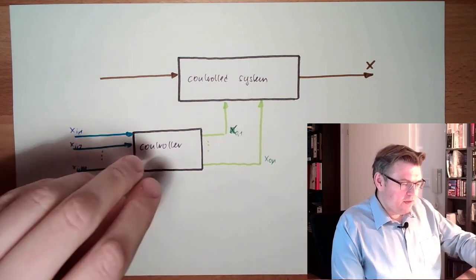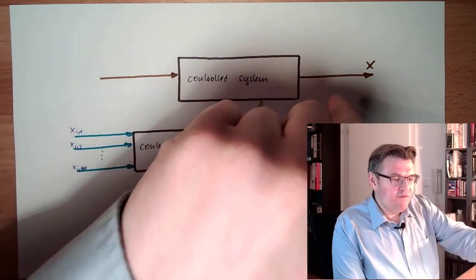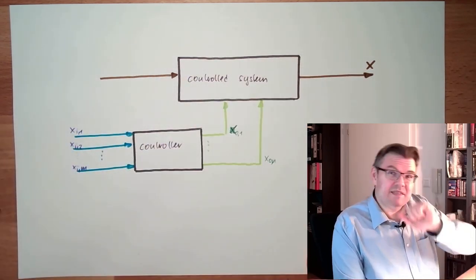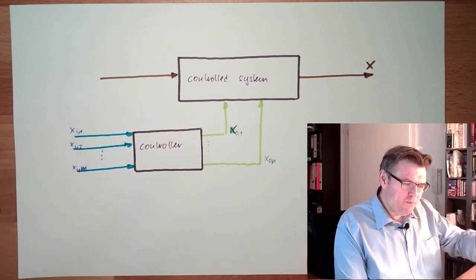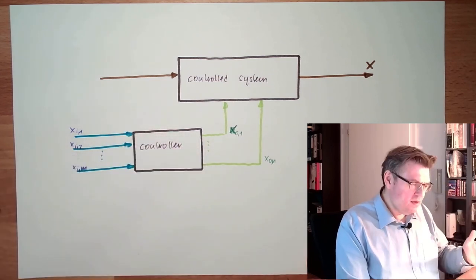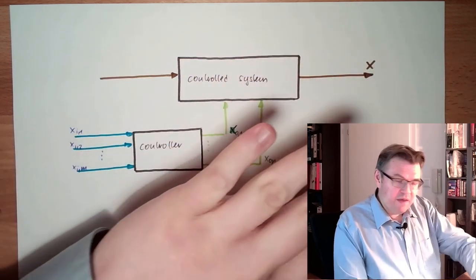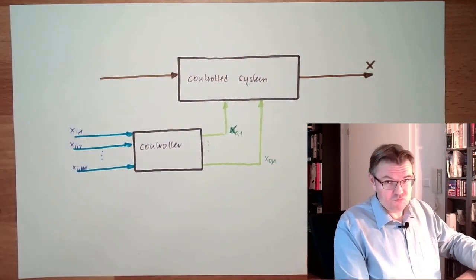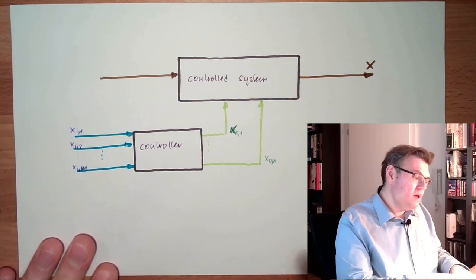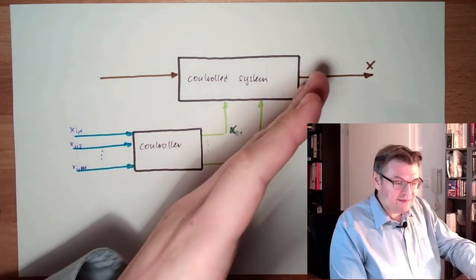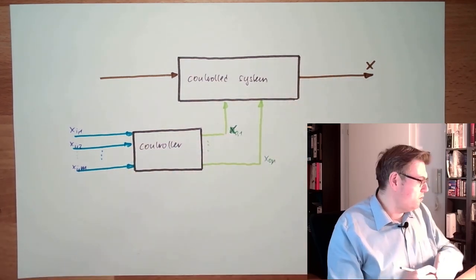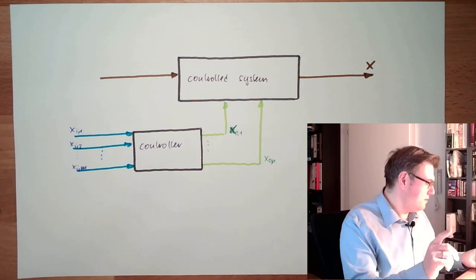However, the controller does not check if the output is really the desired value. The controller is simply doing its thing, hoping for the best. And, if everything is fine, it's really fine. If not, then there might be not the desired output. But, the controller simply does not care.